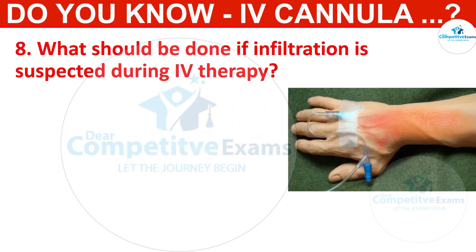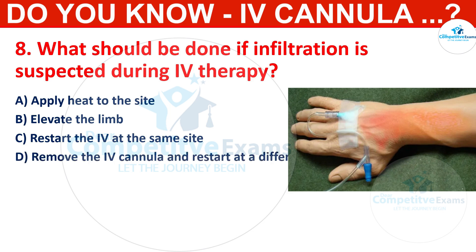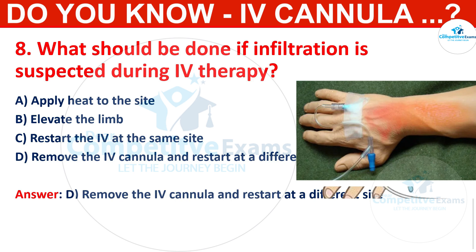Q8. What should be done if infiltration is suspected during IV therapy? Options: apply heat to the site, elevate the limb, restart the IV at the same site, or remove the IV cannula and restart at a different site. The correct answer is to remove the IV cannula and restart at a different site. Infiltration occurs when fluid leaks into the surrounding tissues; removing the cannula and choosing a new site is necessary.